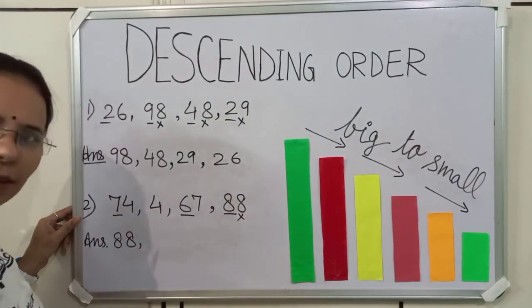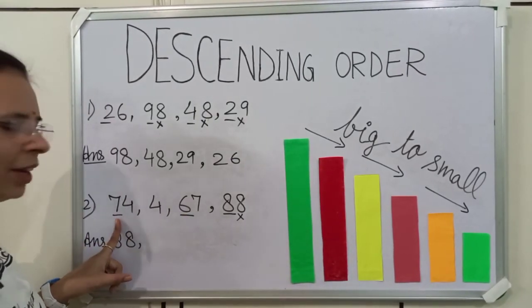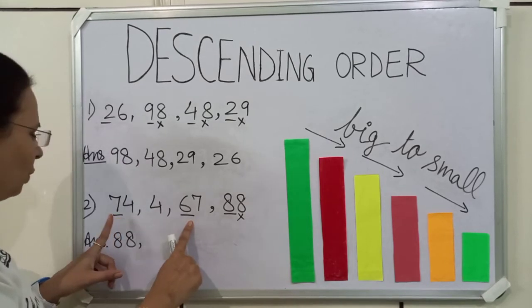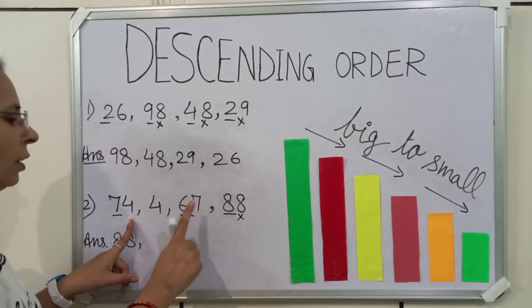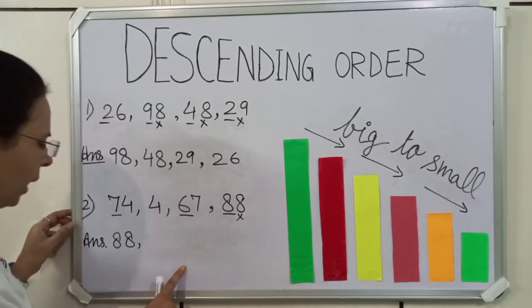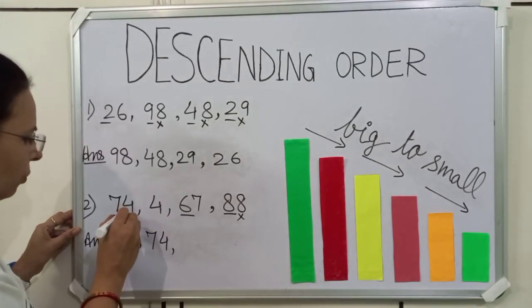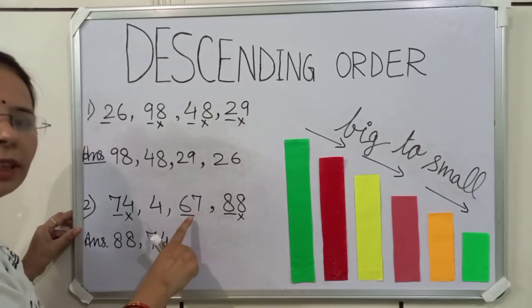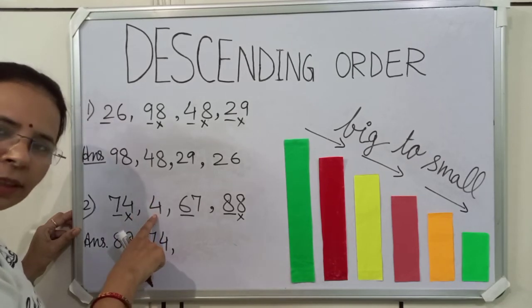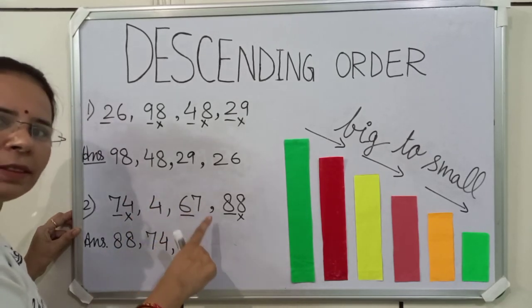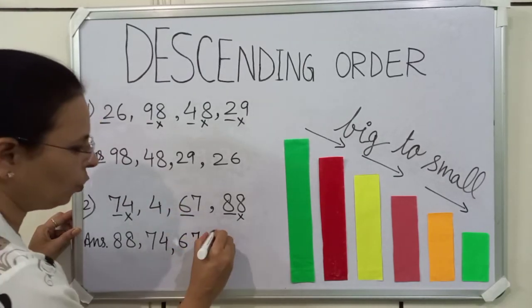Now, we have to find the biggest number among these two numbers. The tens place number is 7 here and 6 here. Which is bigger, 7 or 6? 7. So, 74 is bigger than 67. So, first we will write 74. We have written 74, so we will cut it. Now, what is left? 67 and 4. As we know, 4 is a single digit number, so it is smaller than 67. So, first we will write 67, and at last we will write 4.